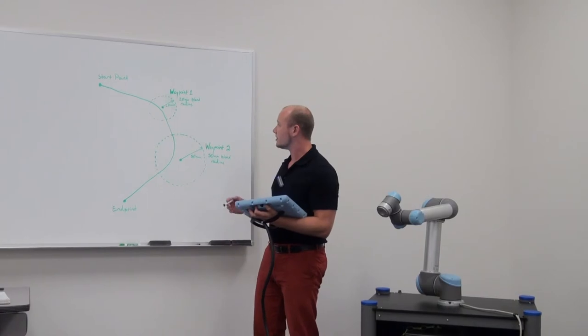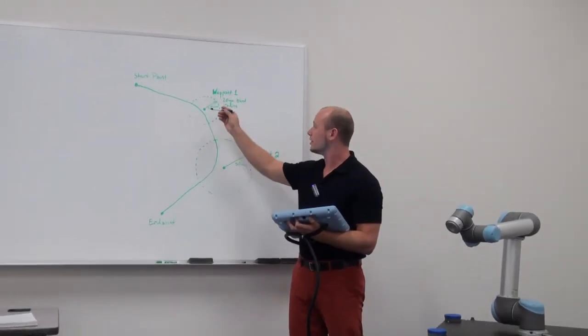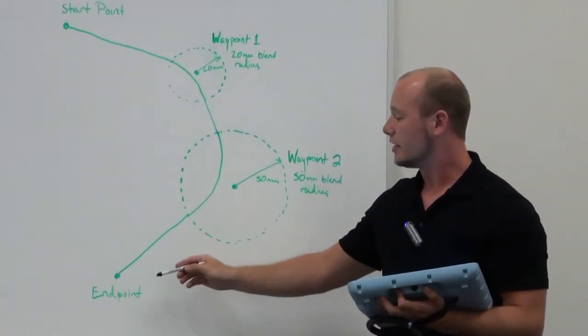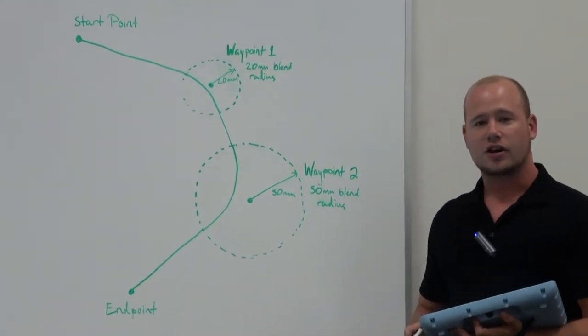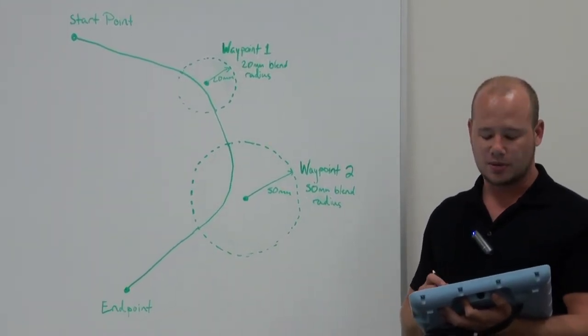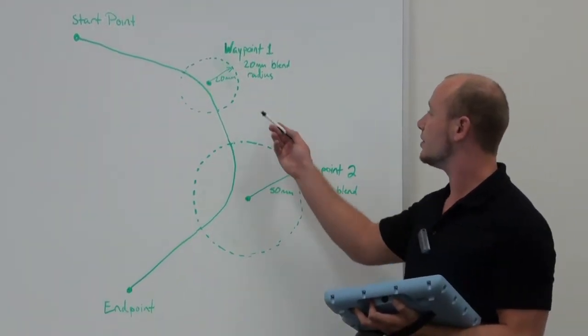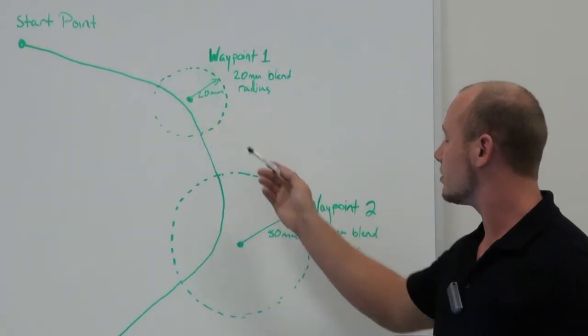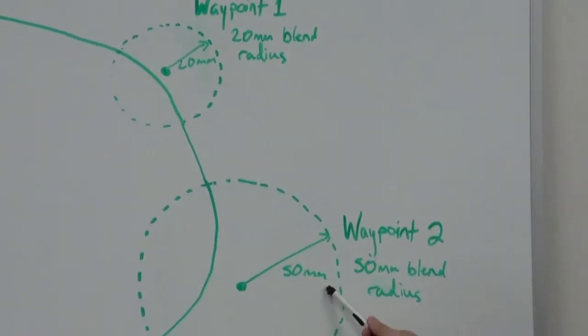What I mean by blends, as you can see here, I have a starting point, two waypoints, and an end point. And on the robot controller, you can set up a blend radius. For example, here I have a blend radius of 20 millimeters and a blend radius of 50 millimeters.